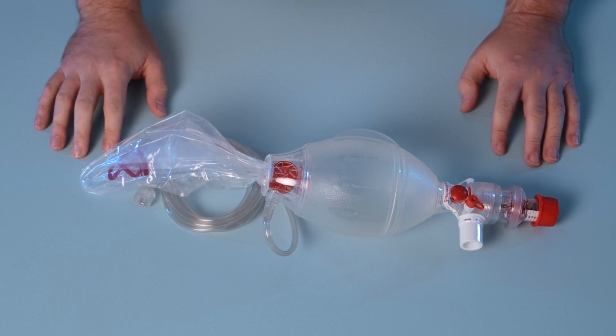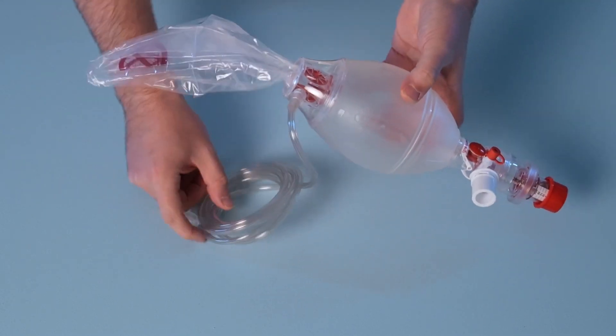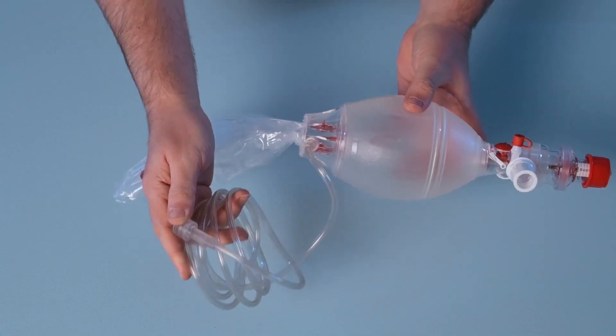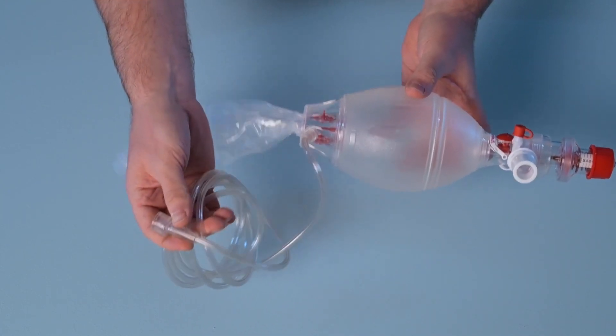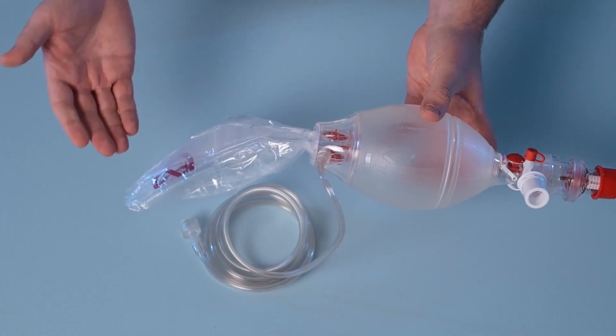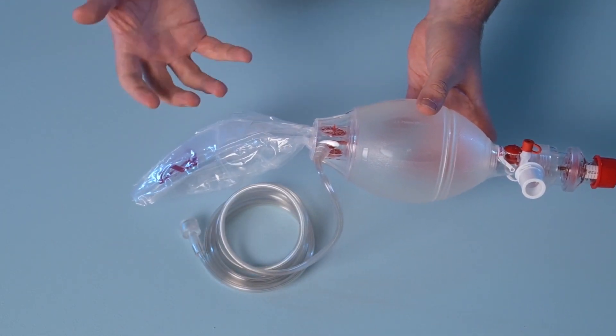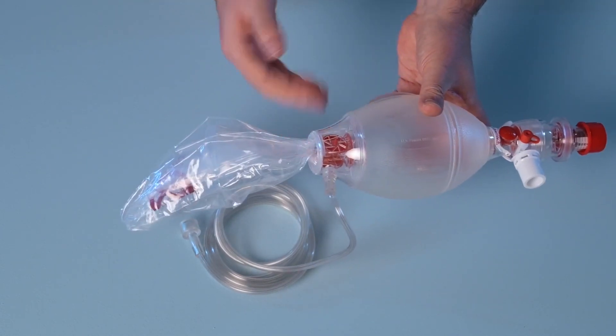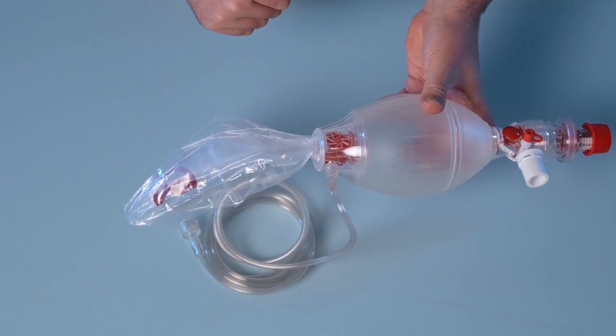Now to check the functionality of the oxygen tubing and the oxygen reservoir connect the oxygen tubing to an oxygen supply and increase the flow to 10 litres a minute. Ensure that the reservoir fills and begins to inflate. If this doesn't happen check the integrity of the two valve shutters or for a torn oxygen reservoir.